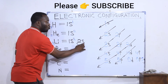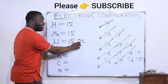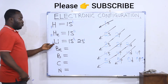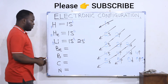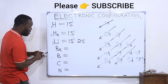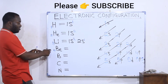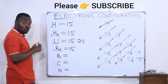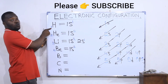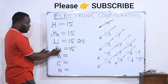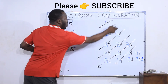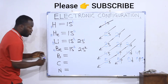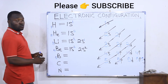Lithium's configuration is 1s² 2s¹. For beryllium, it is element number four with four electrons. Starting again: 1s collects two, remaining two. The next orbital is 2s, which collects the remaining two. So beryllium's configuration is 1s² 2s².